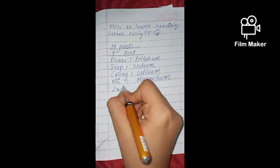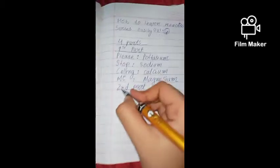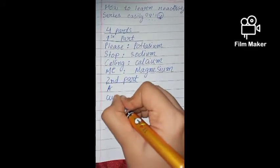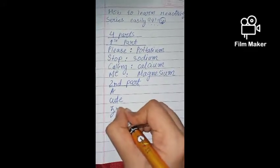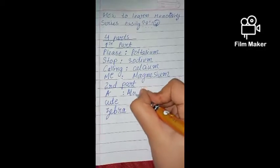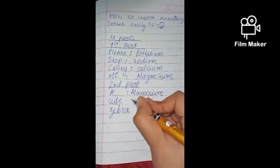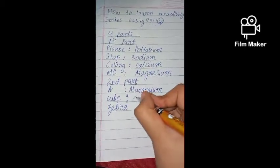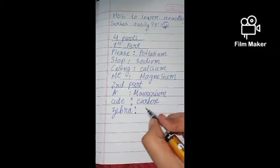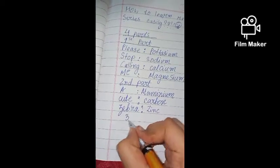Now it's time for the second part. So in the second part we have to write: Oh Cute Zebra. A for Aluminum, C for Carbon, and Z for Zinc. So now the third part.